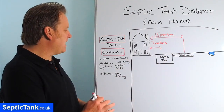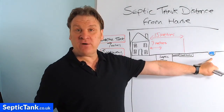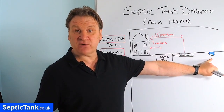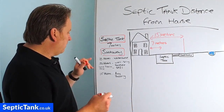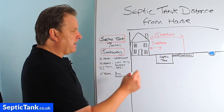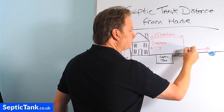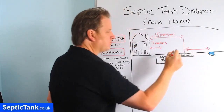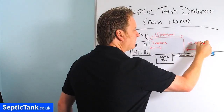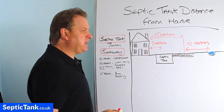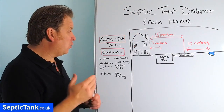So now what about the distance of the soakaway from a river, brook, stream, spring, well or borehole? Well, building regs states that a soakaway must be at least 10 meters from any river, stream, brook or ditch.